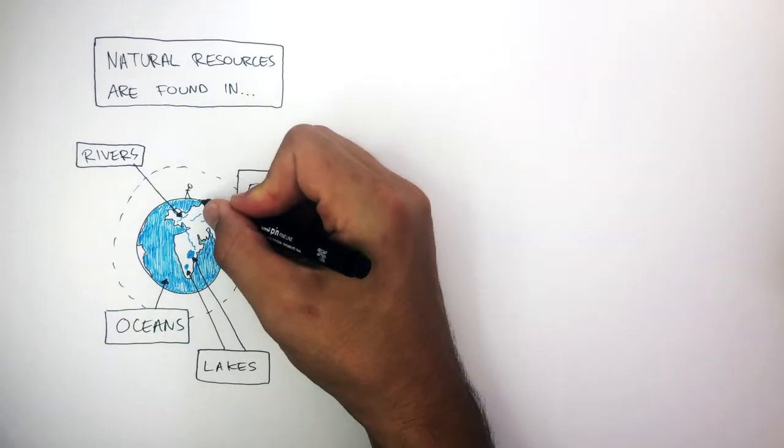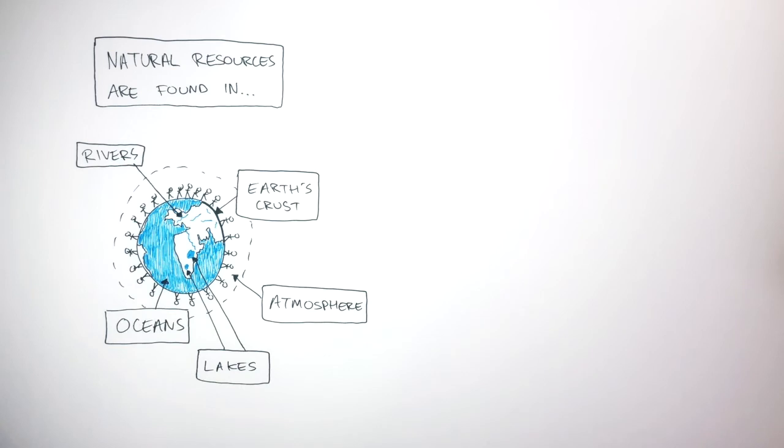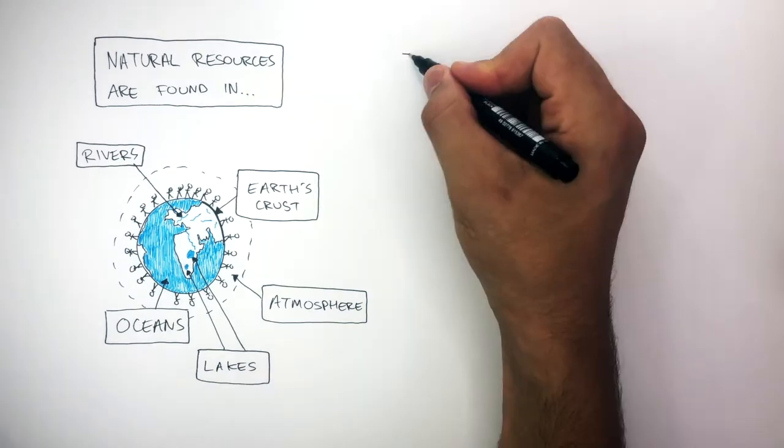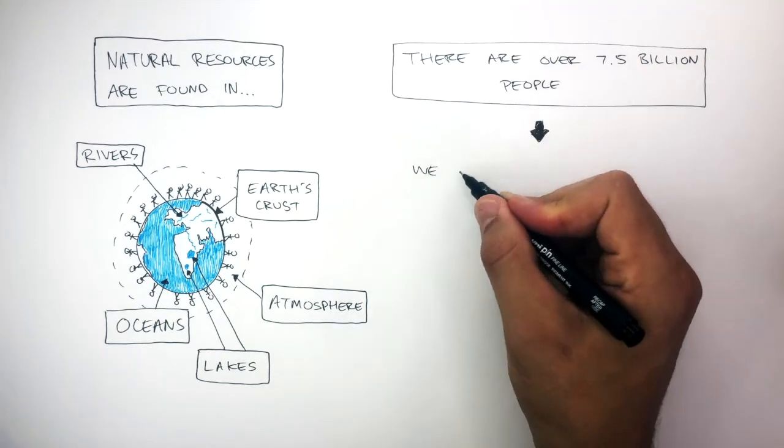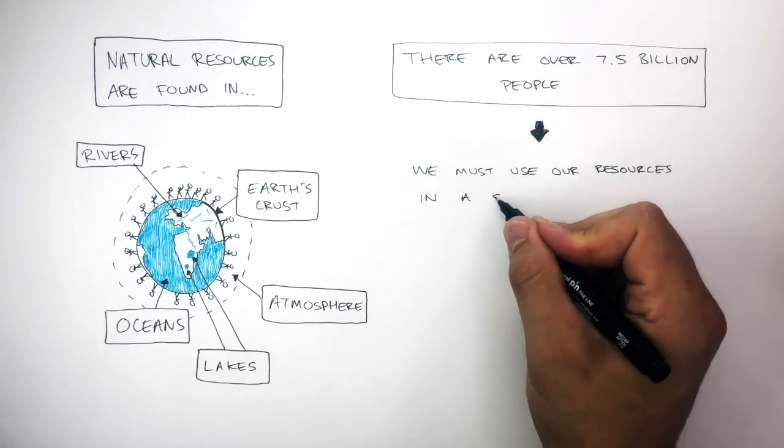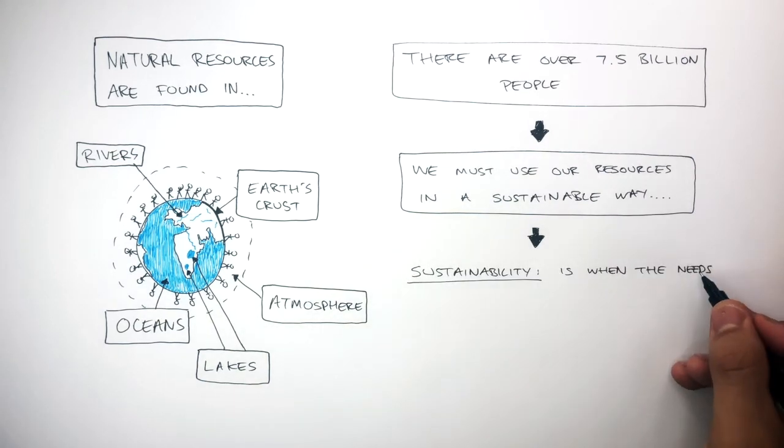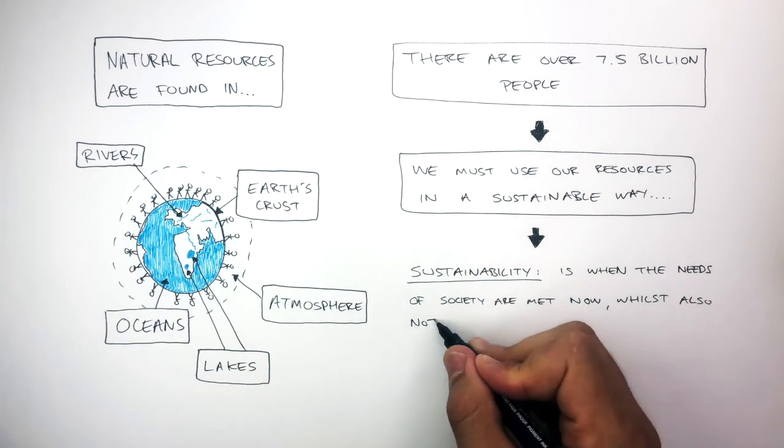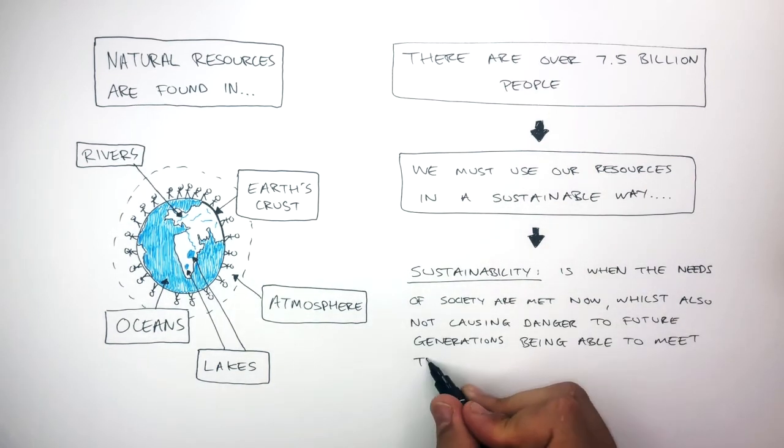So, there are over 7.5 billion people in this world who are sharing these resources. Because there are over 7.5 billion people in this world, we must use our resources in a sustainable way. Sustainability is when the needs of society are met now, whilst also not causing danger to future generations being able to meet their needs.